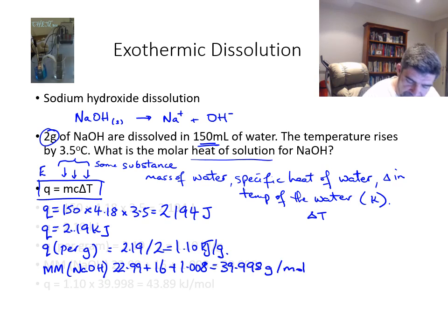That means I can now do my final calculation where the Q value is equal to the actual amount of energy per mole by multiplying 1.10 by 39.998, and I end up with a value of 43.89 kilojoules per mole.